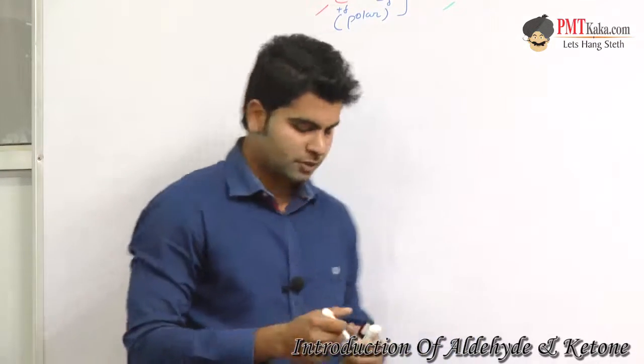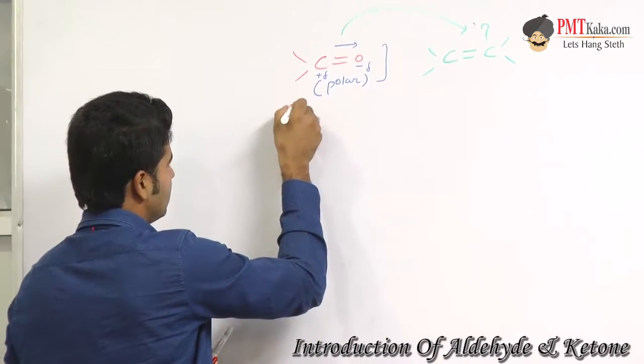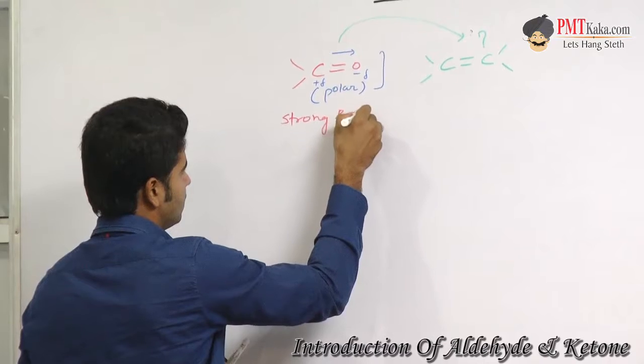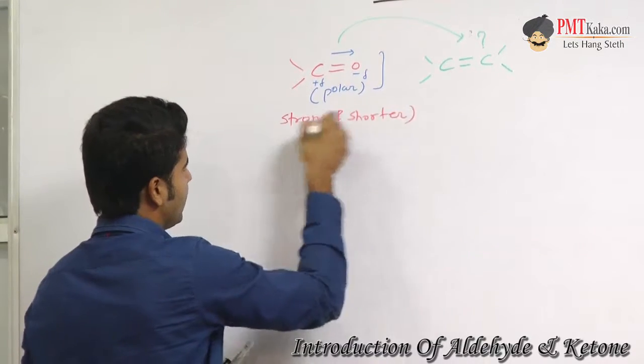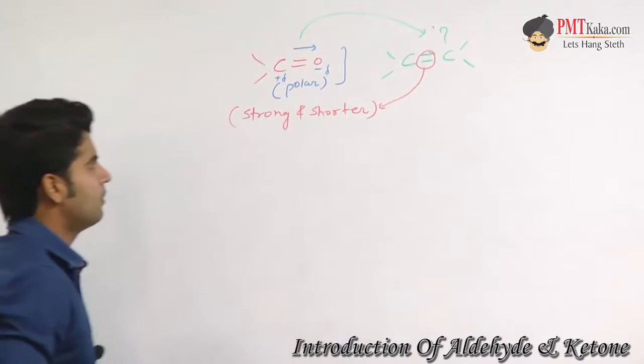So this bond is strong and shorter compared to this bond, that is the carbon double bond.